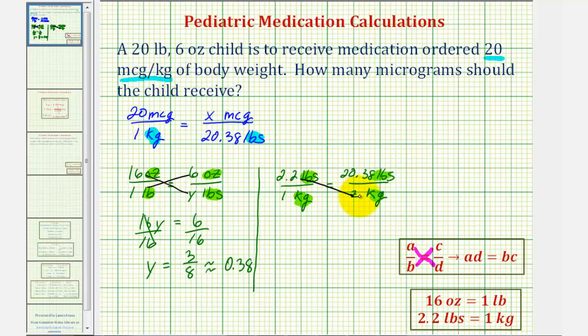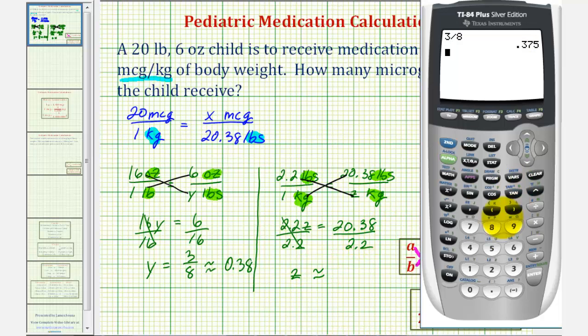So we have two point two times Z must equal one times twenty point three eight. So we have two point two Z equals twenty point three eight. Divide both sides by two point two. So Z will be equal to this quotient here, which we'll have to round. So twenty point three eight divided by two point two is going to be approximately nine point two six if we round this to two decimal places. Here we have a three to the right, keeping this a six, so nine point two six.